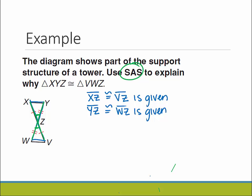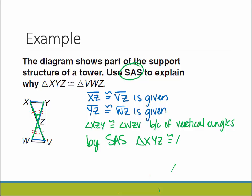So how can I say that those two angles are the same? Well, they're vertical angles. So I can say angle XZY has to be congruent to angle WZV because of vertical angles. And now we have by side-angle-side that these two triangles have to be congruent.